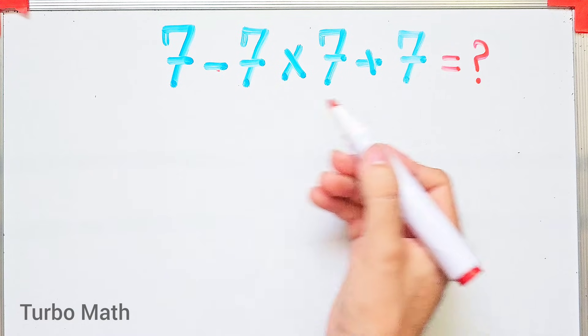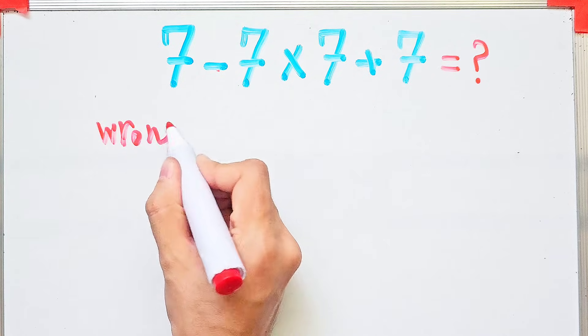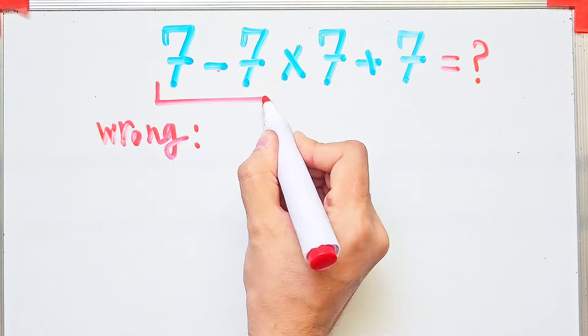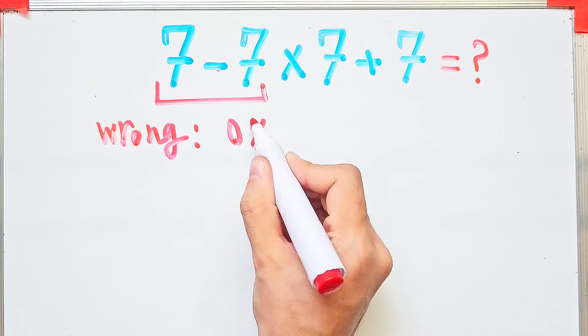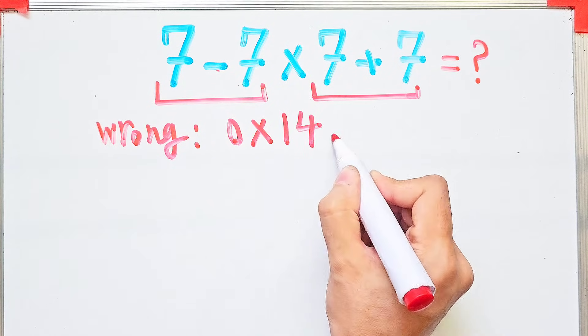In the wrong way of solving these questions, some people don't pay attention to the priority of the mathematical operations. They start from the left and simplify seven minus seven equals zero, and zero times fourteen equals zero.